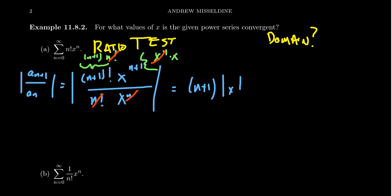Notice that I removed the absolute value around (N+1) because as N ranges from 0 to infinity, N+1 is always positive, so the absolute value is redundant. I retained the absolute value around X because X could be positive, negative, or zero — any real number potentially — so the absolute value is necessary for our calculation.